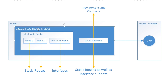Within the layer 3 out you need to create a logical node profile. I would recommend creating just one logical node profile for the L3Out. Within the logical node profile there are two things that need to be created: first, you need to add nodes — each node is basically a leaf switch — and on each leaf switch you add a static route. Second, you need to create an interface profile, where your SVIs, routed interfaces, or sub-interfaces are defined. Another construct within layer 3 out is the L3Out network, which also needs to get created.